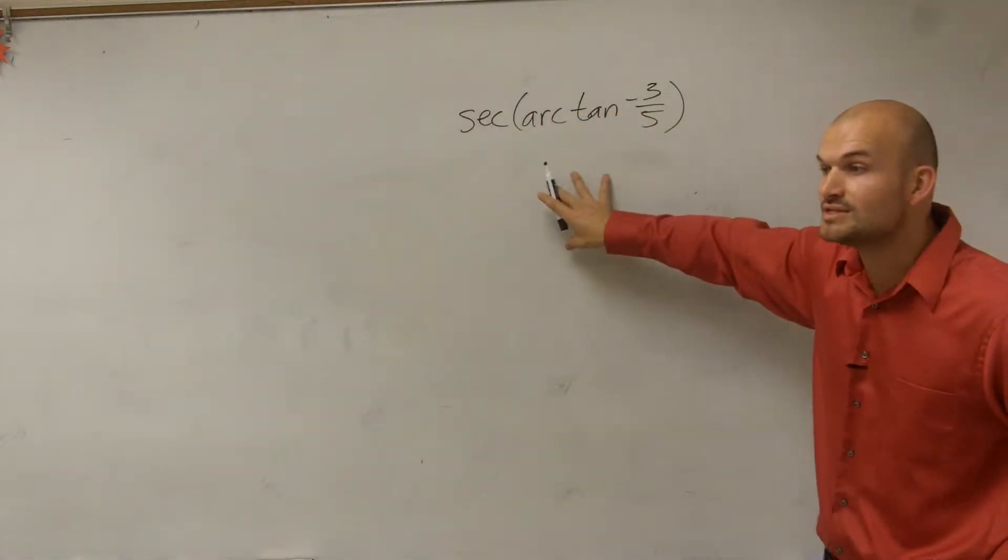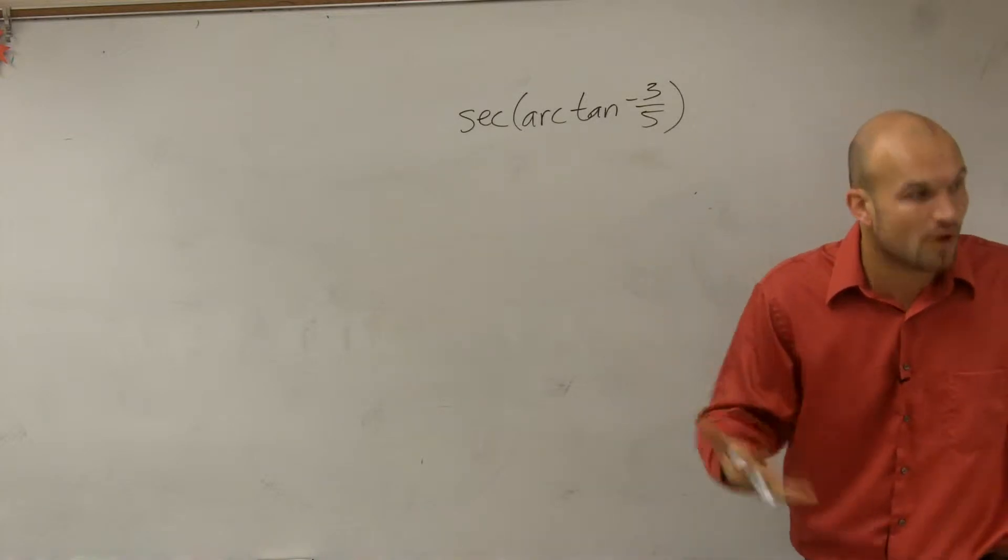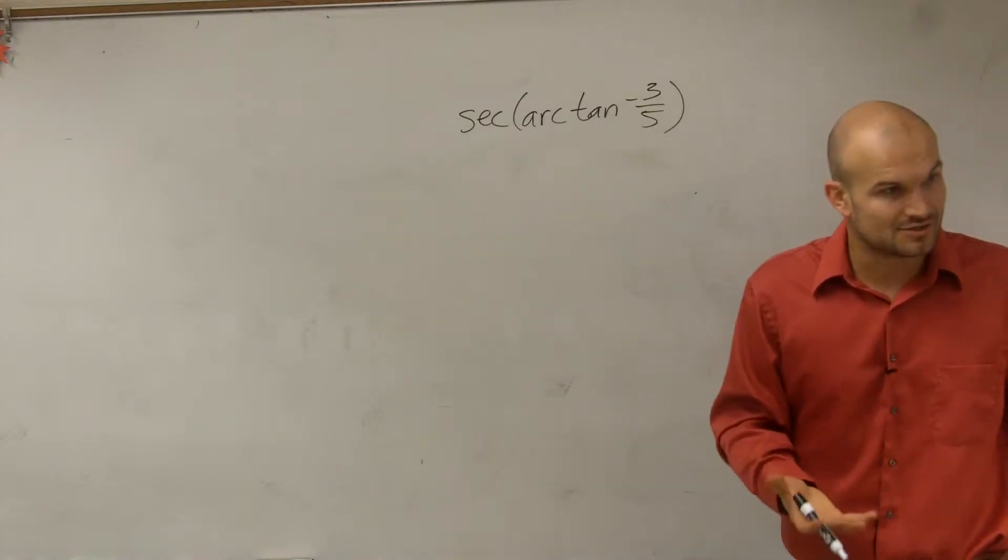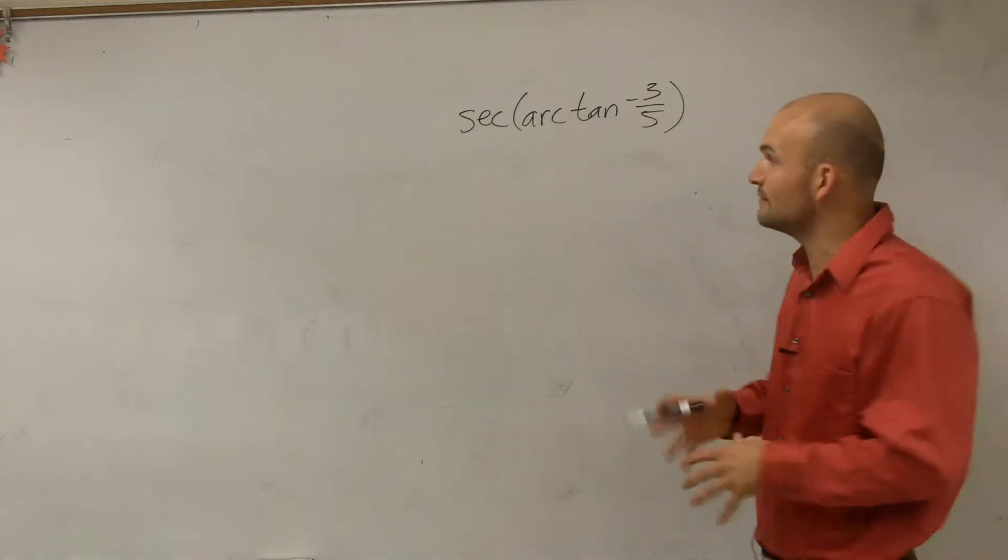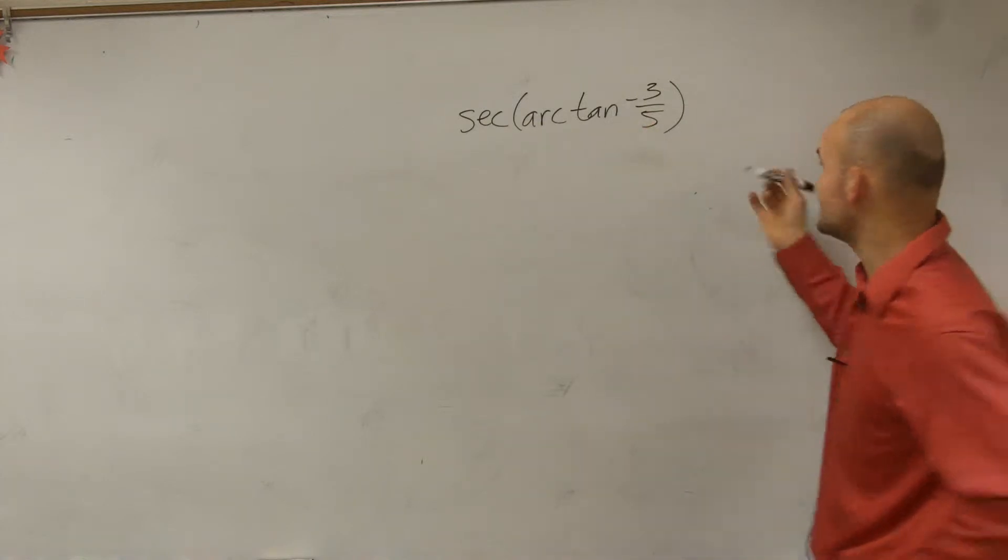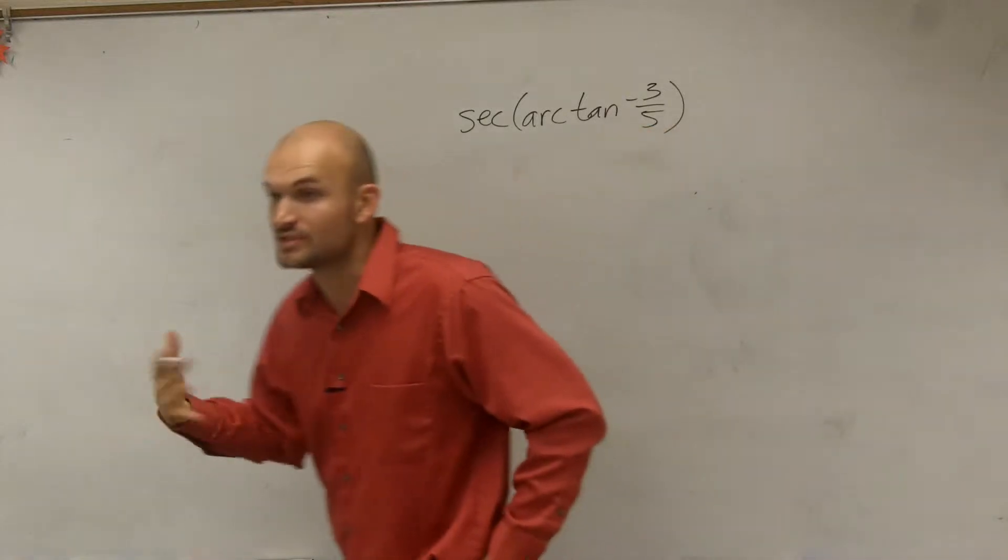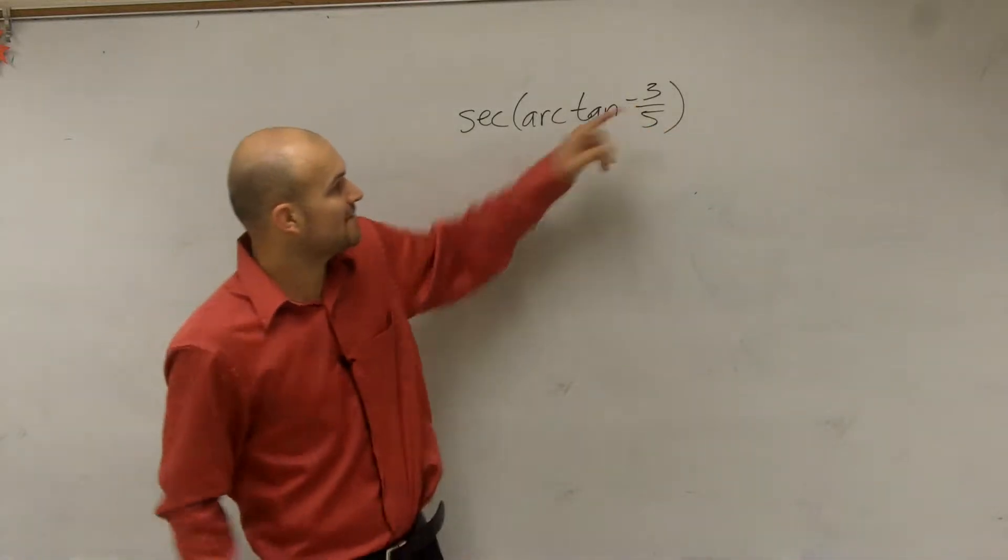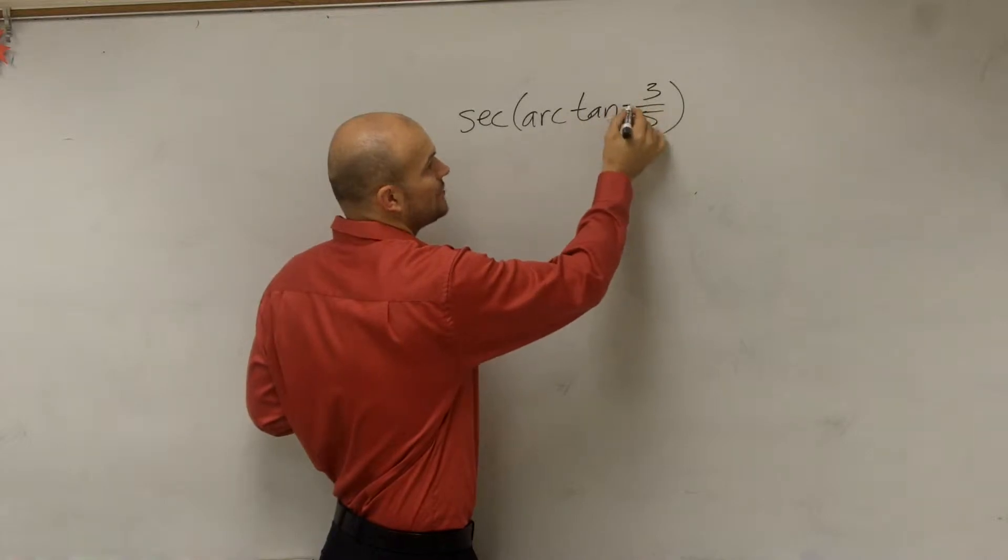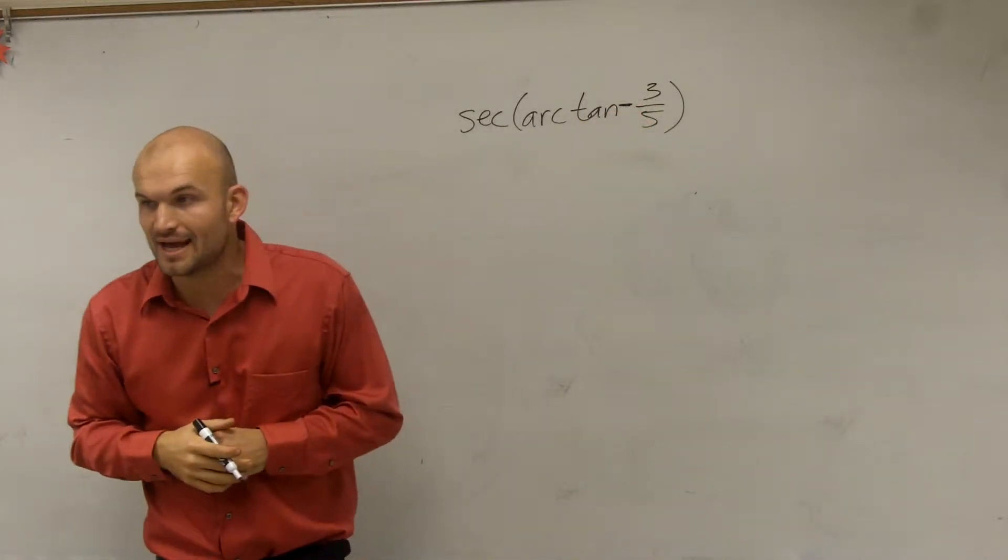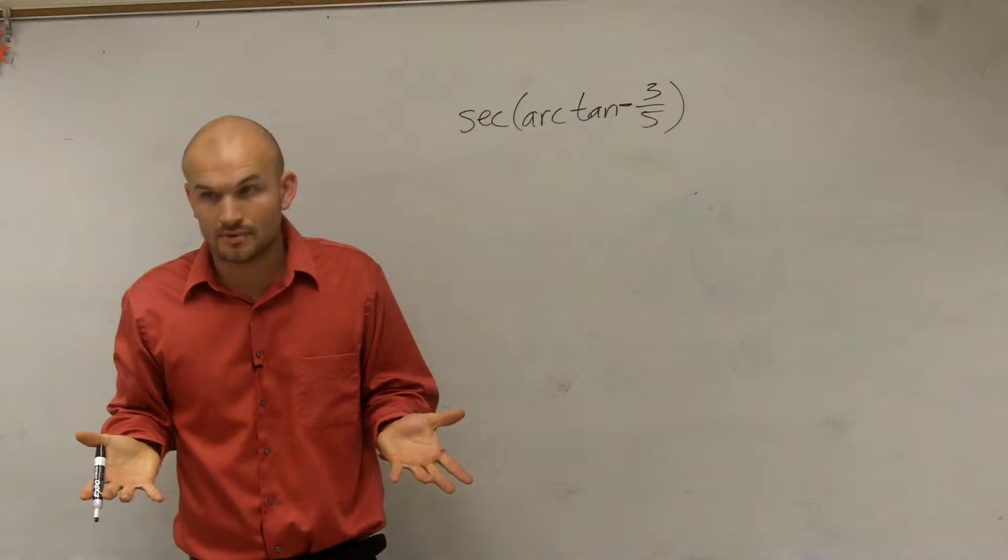Now, it's going to be very important, though, remember that we still need to fall within our range, right? That's the main important thing about using our inverse functions. So remember, tangent, if we're going to look at tangent, tangent is going to represent our opposite over our adjacent. And we have a negative 3 over 5, which I don't know which side is going to be negative, either my opposite or my adjacent, right?